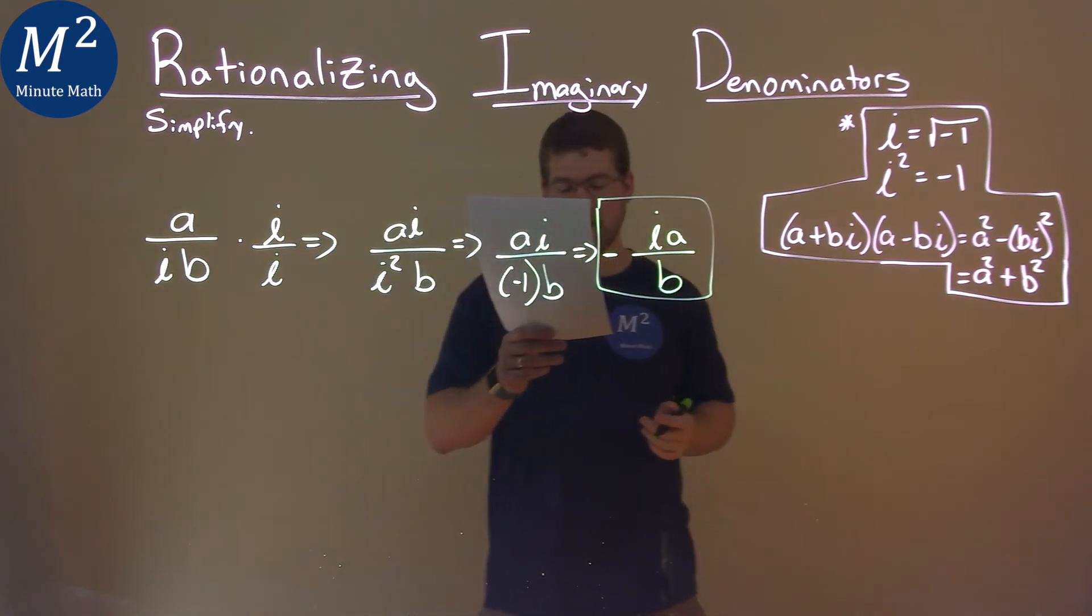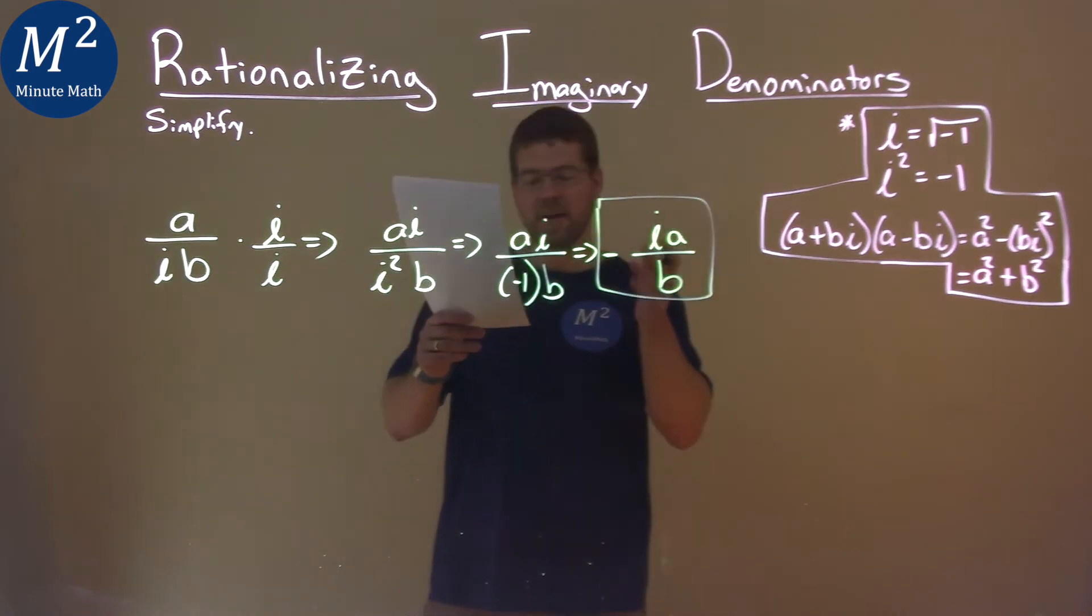And now we actually have our final answer, negative IA over B.